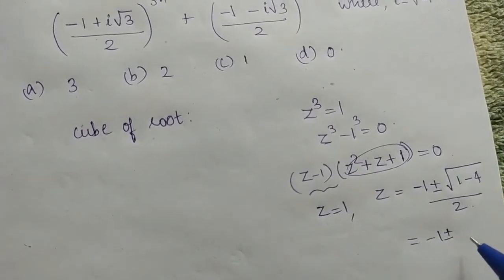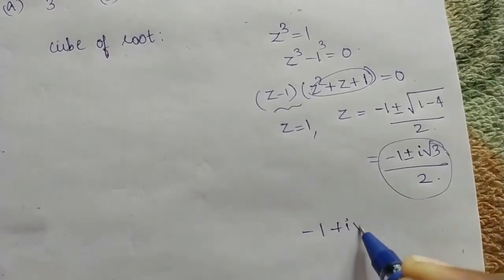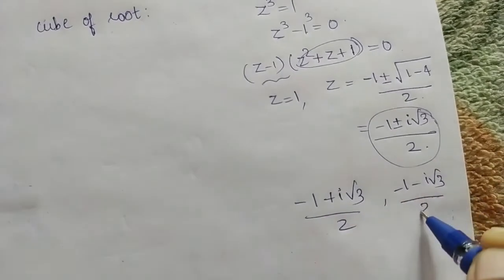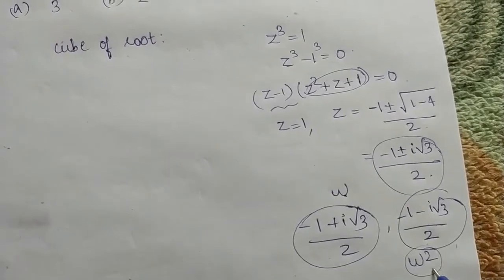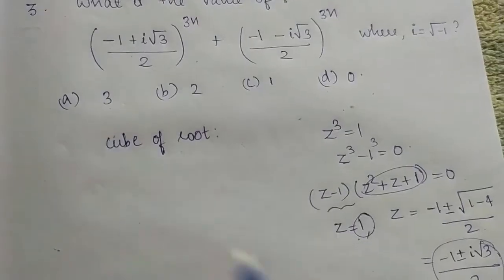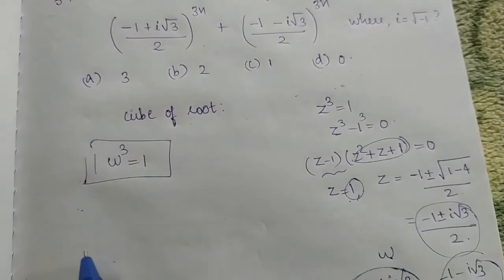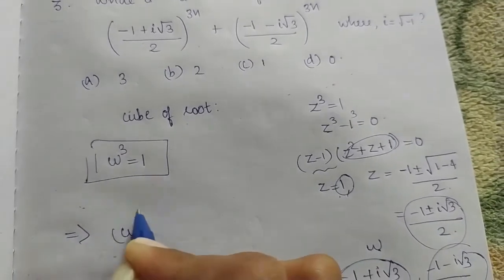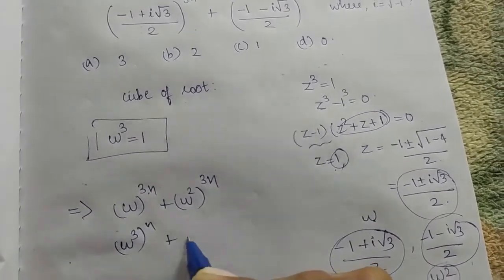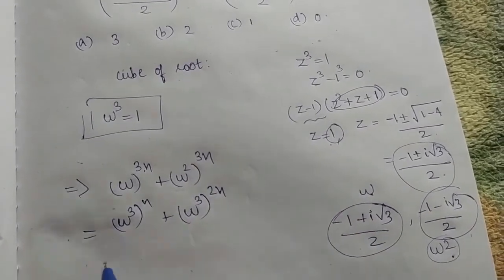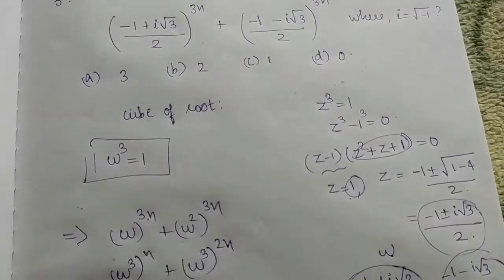The roots are minus 1 plus or minus i root 3, divided by 2. So z equals 1, and the two complex cube roots are omega equal to minus 1 plus i root 3 over 2, and omega squared equal to minus 1 minus i root 3 over 2. Since omega cubed equals 1, we evaluate omega raised to 3n plus omega squared raised to 3n. Each term becomes 1 raised to n equals 1, so the total is 1 plus 1 equals 2. Option B is the right answer.